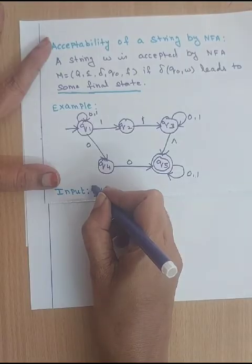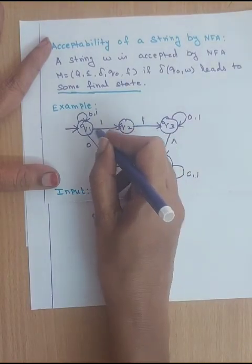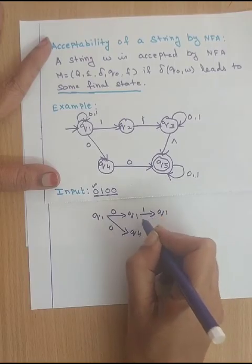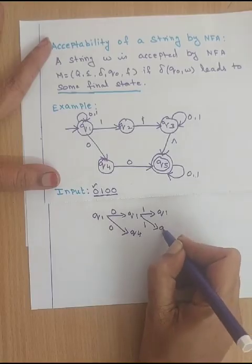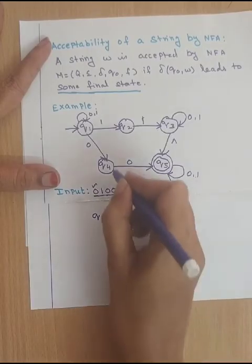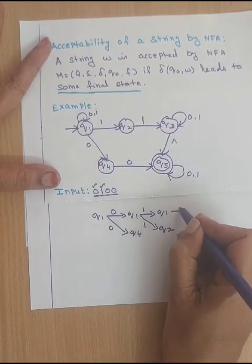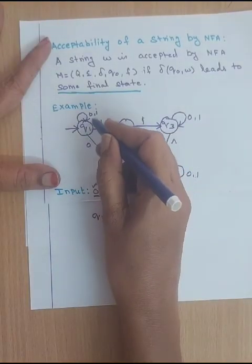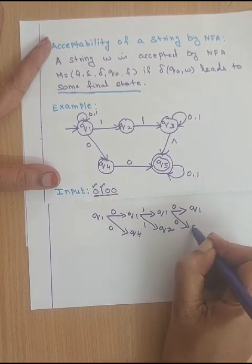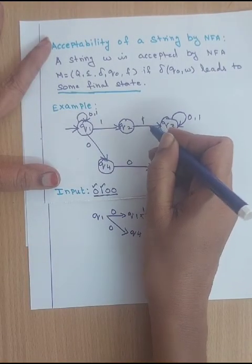Next digit is 1. We have to check Q1 on 1. Q1 on 1 goes to itself and also to Q2. Next we check Q4 on 1, but there is no transition for Q4 on 1, so it is blocked. Next digit is 0. Q1 on 0 goes to Q1 as well as Q4. Q2 on 0 also — there is no transition from Q2 on 0, so this is blocked.